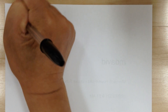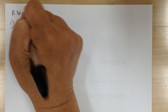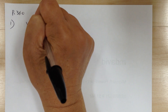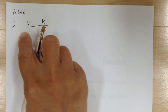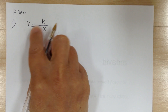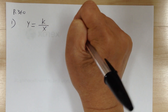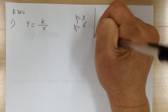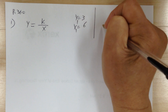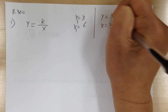Let's go to page 360, start with number 1. It says if y varies inversely, that means k over x. So y varies inversely as x. When y equals 3, x equals 6 — that's case 1. Case 2: find x when y is equal to 18.